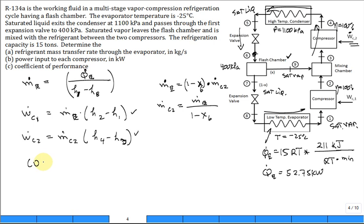The coefficient of performance for the refrigeration system is what we desire, a lot of cooling - 15 tons of cooling - divided by the power we provide to the compressors. I think these are all doable, but you do have to go through the problem yourself.